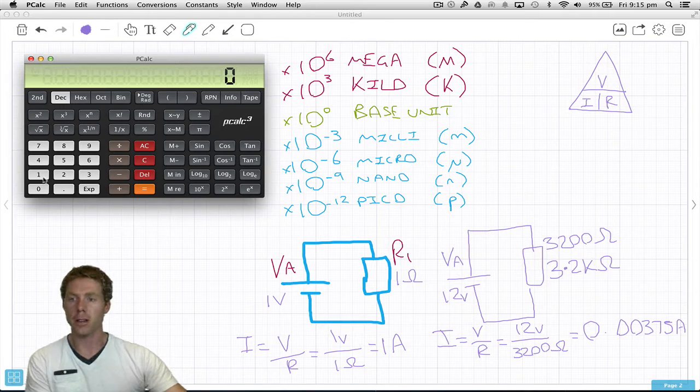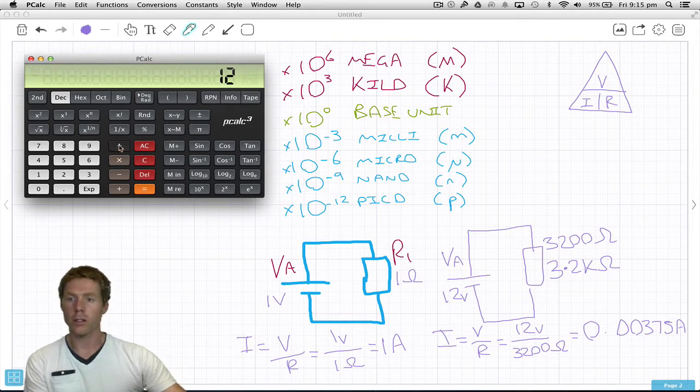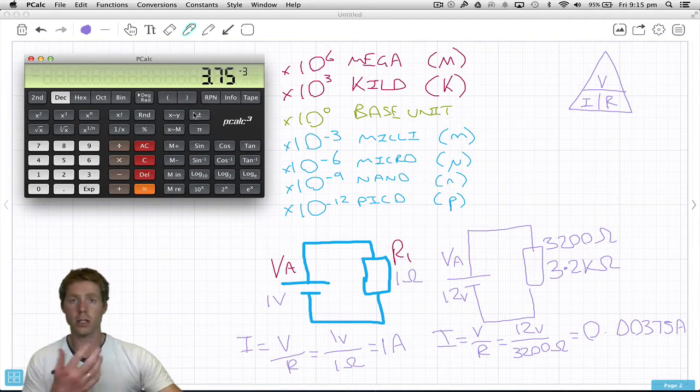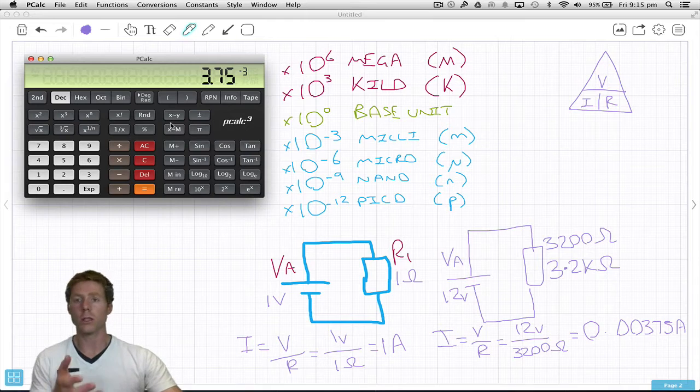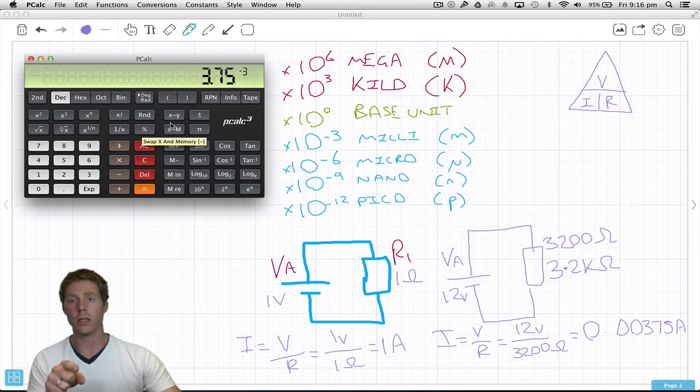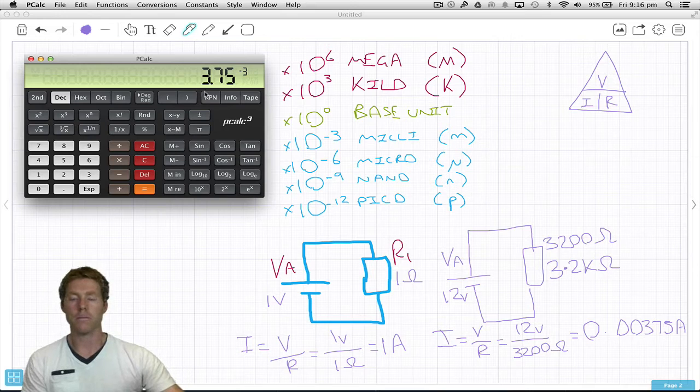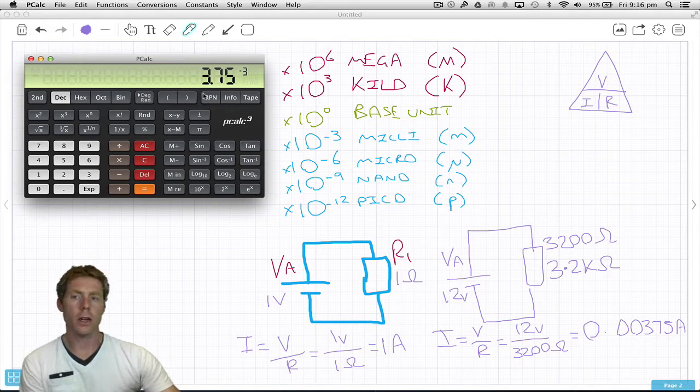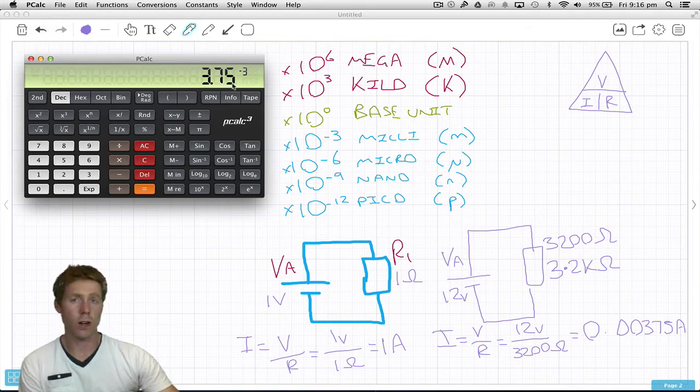Let's try it again. 12 volts divided by 3200 ohms. It's defaulting to engineering notation, but on some calculators you have to press the ENG button after every calculation. It's telling me I'm getting 3.75 with this little negative 3 here.